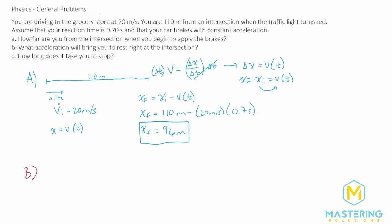Moving on to Part B: what acceleration will bring you to rest right at the intersection? We'll use the kinematic equation v_final squared equals v_initial squared plus two times acceleration times delta x. The reason we're using this one is because we don't have a time — we don't know how long the stopping motion takes. But we have the final velocity, initial velocity, and delta x, so we just need to isolate acceleration.